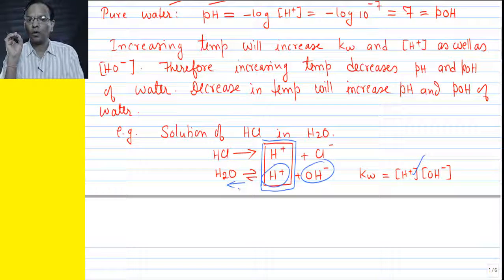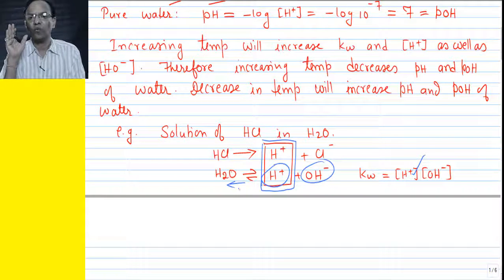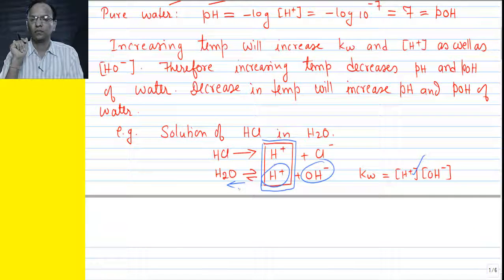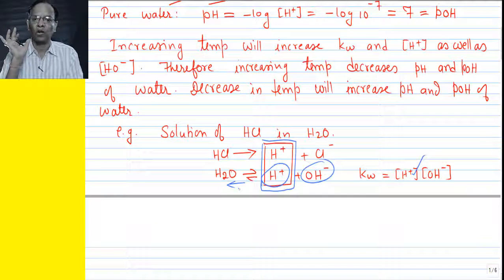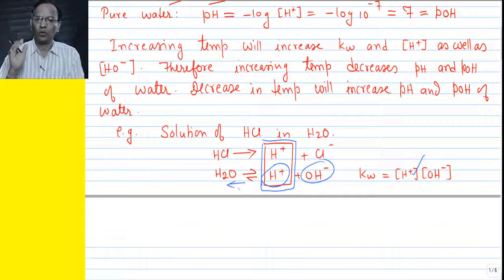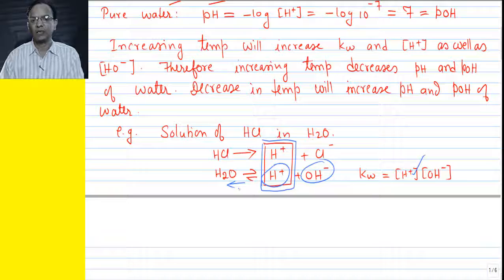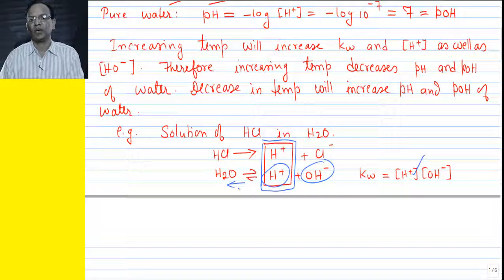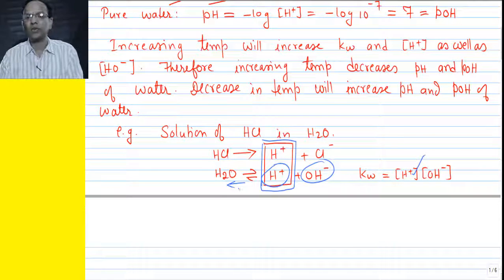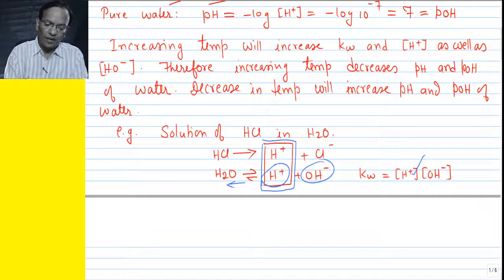That means in solution, the contribution of water to total hydrogen ion concentration will not be 10⁻⁷ M as in the case of pure water. Water will contribute a hydrogen ion concentration less than 10⁻⁷ M due to the common ion effect — this reaction will shift in the backward direction. This can be accounted for in two ways.